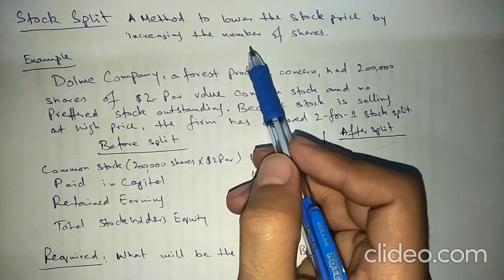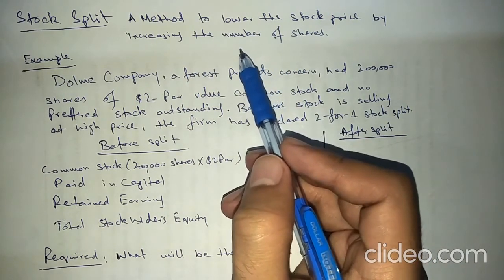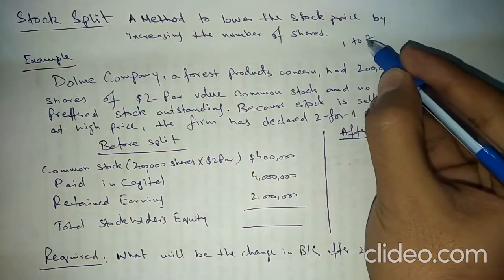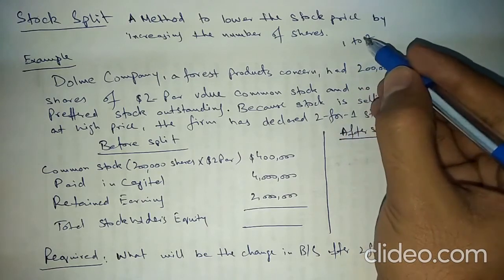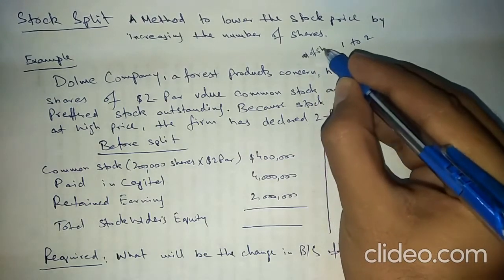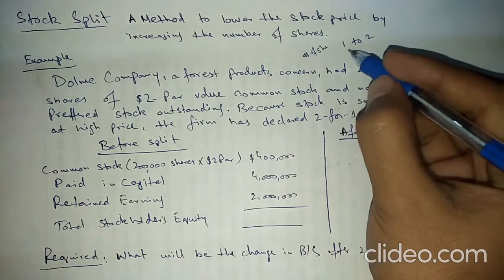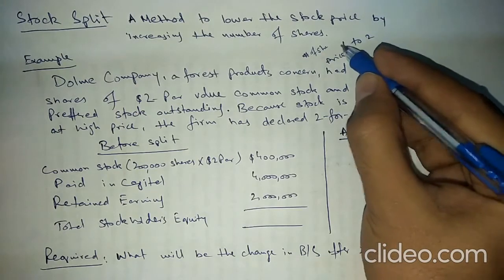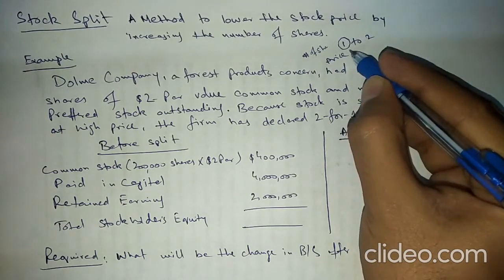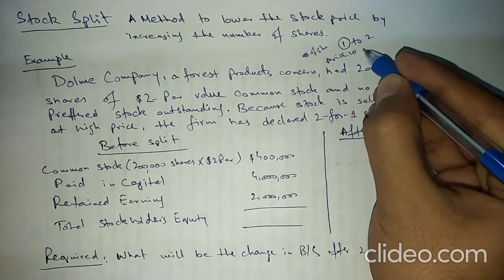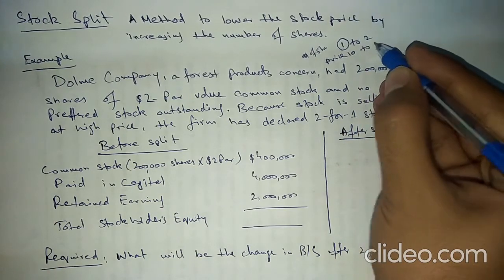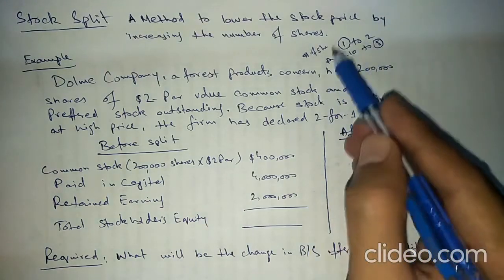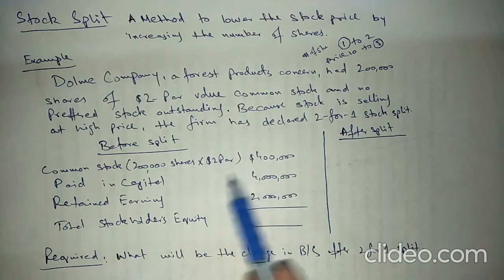Whenever any company splits their stocks — for example, if a company splits one share into two parts — they are increasing their shares but the price will also decrease. The number of shares increases and the price decreases. If the price of one share is 10 rupees, then after the stock split the price of two shares will be five.